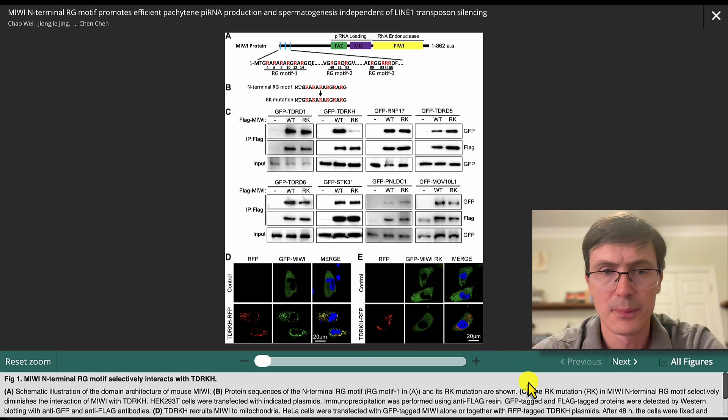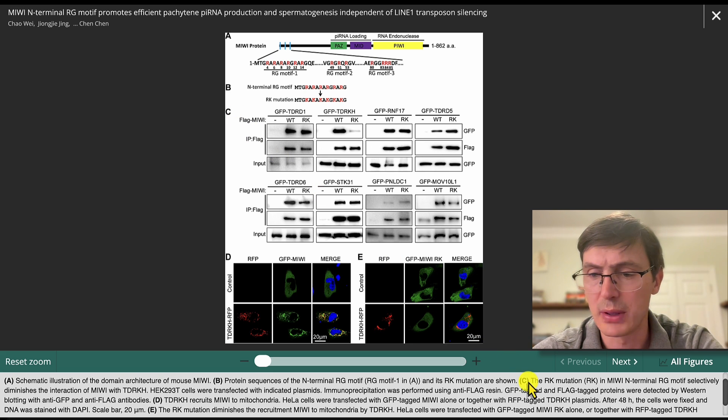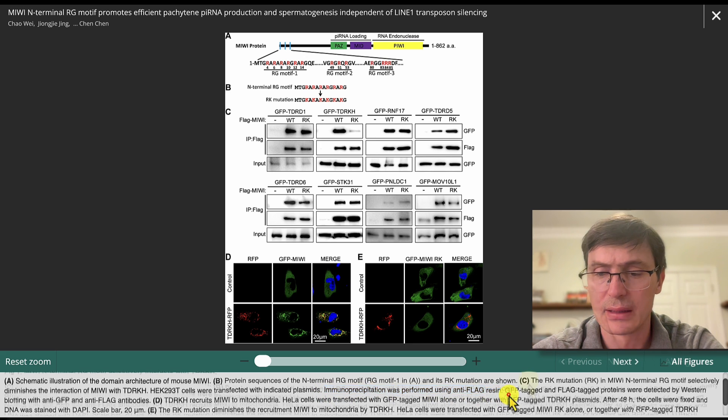Here things get a little bit more interesting. So the authors write, the RK mutation, RK, MIUI, and terminal RG motifs selectively diminishes the interaction of MIUI with the RK. HEK 293T cells were transfected with indicated plasmids. Immunoprecipitation was performed using anti-flag resin.